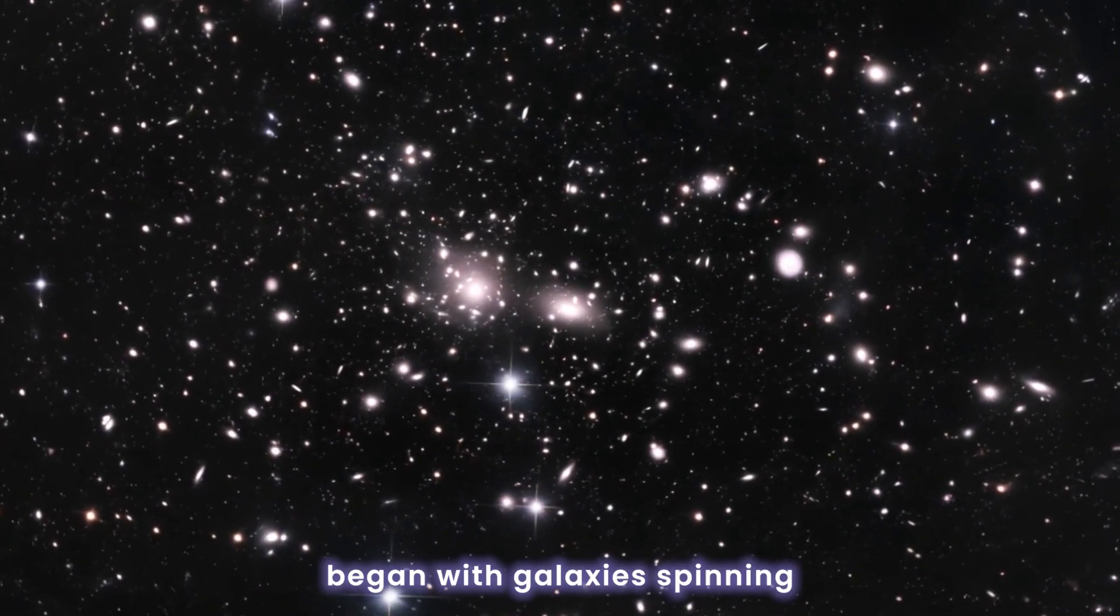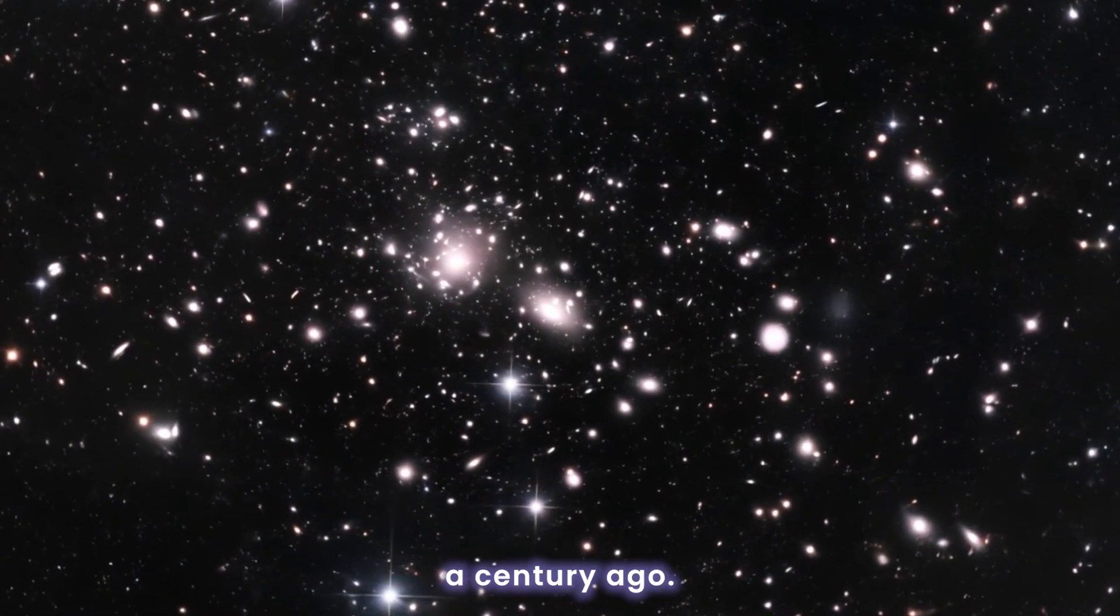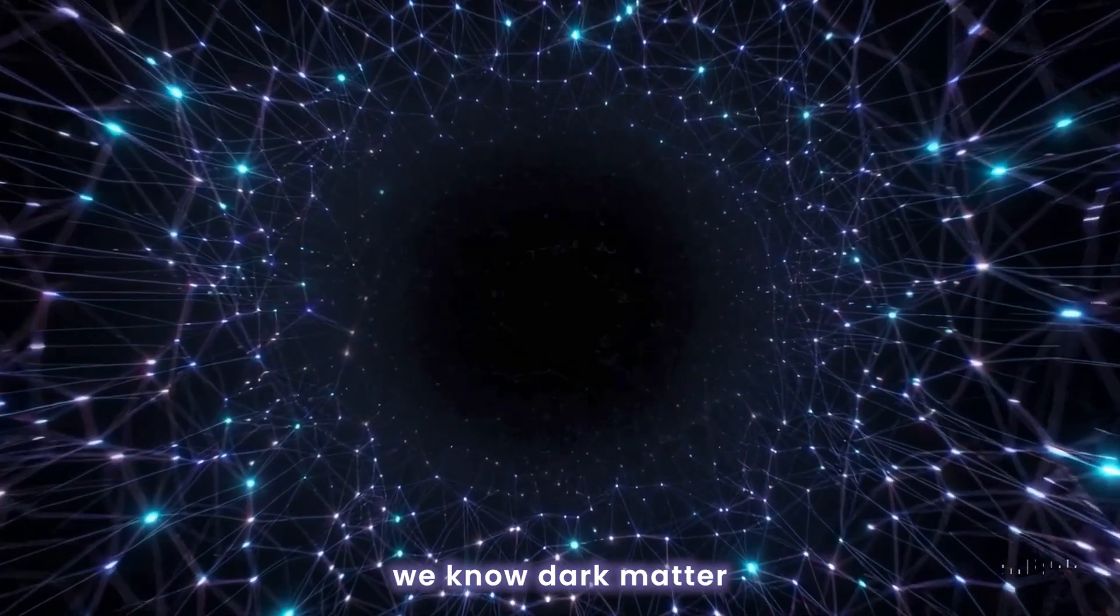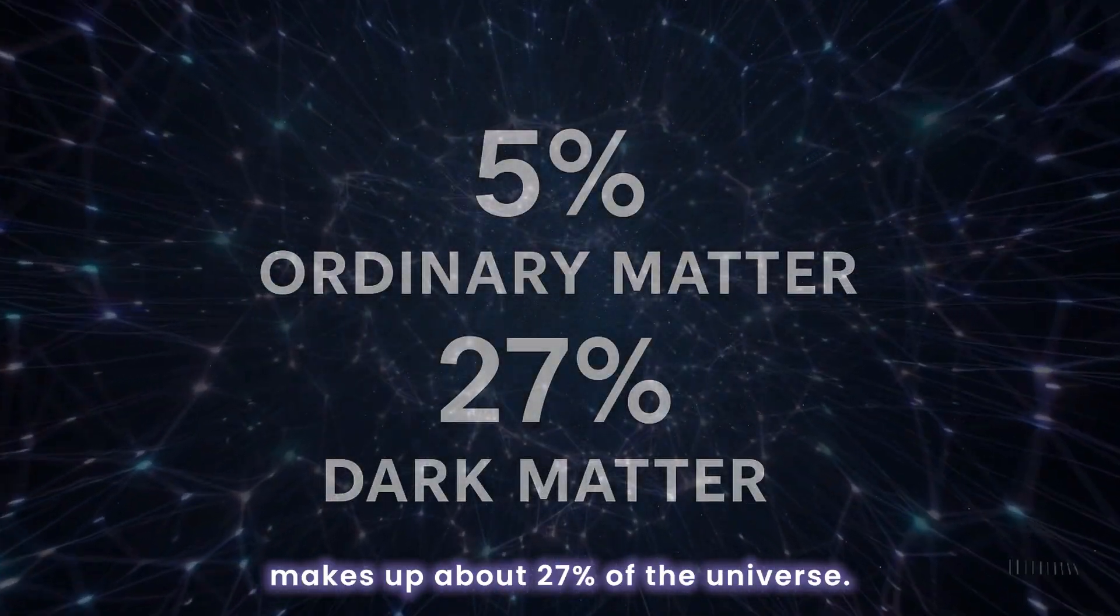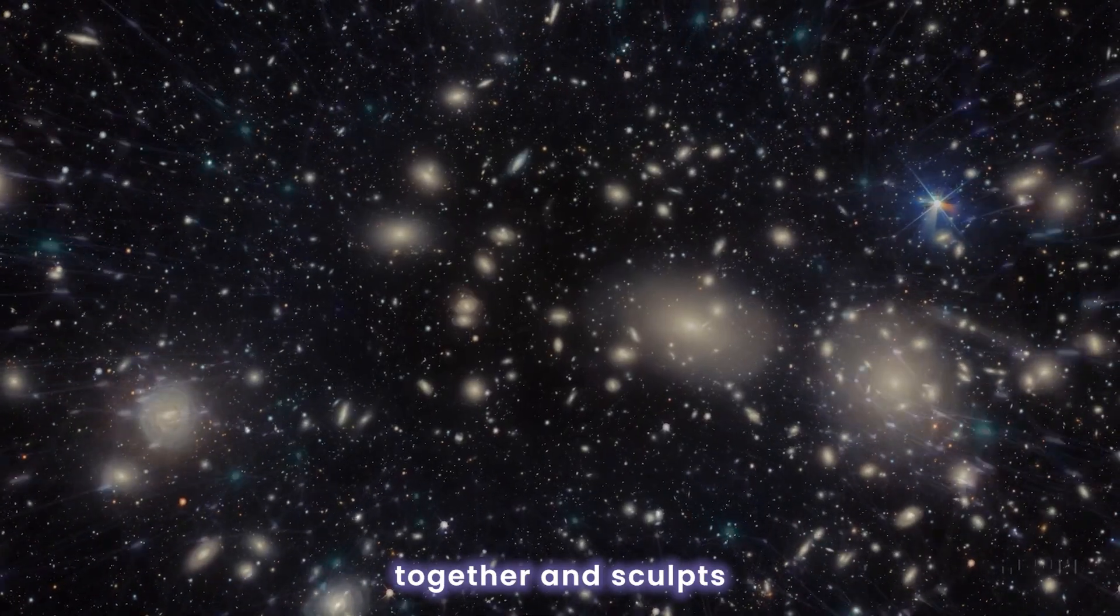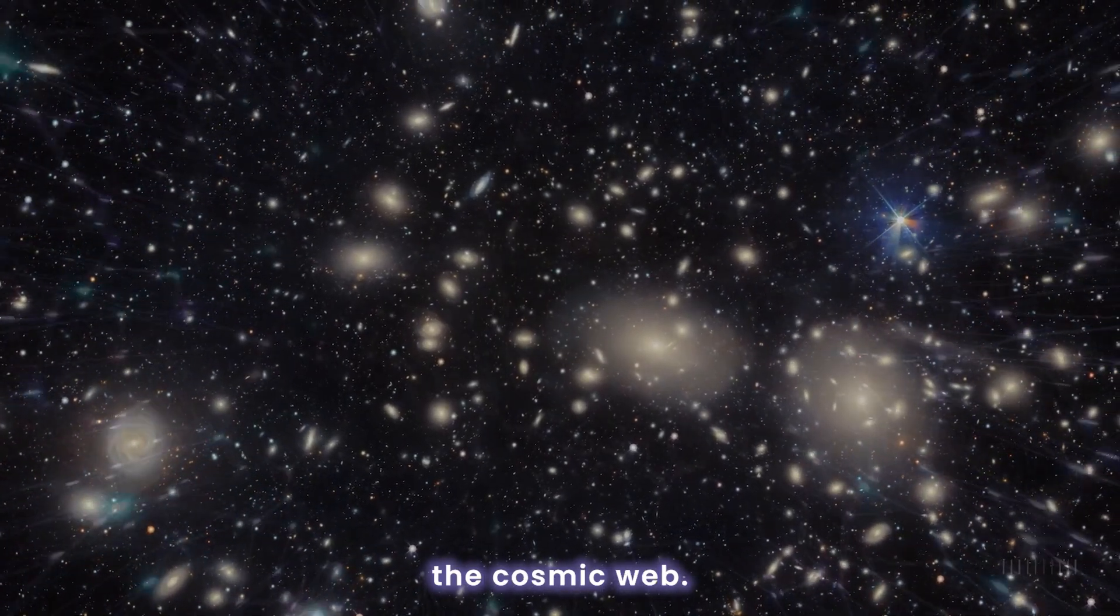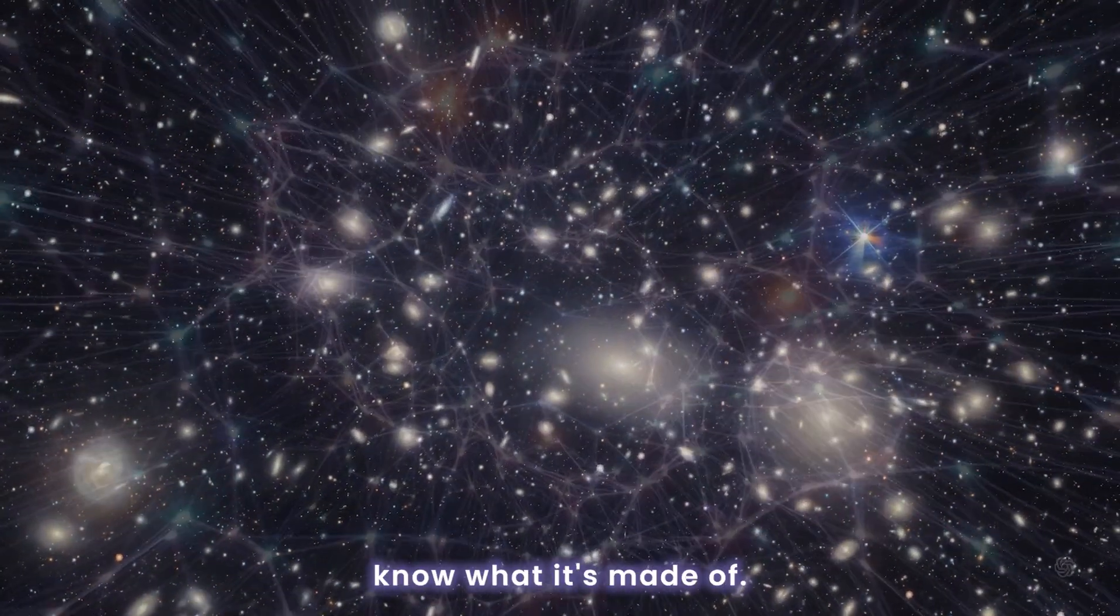It all began with galaxies spinning too fast nearly a century ago. Today, we know dark matter makes up about 27% of the universe. It holds galaxies together and sculpts the cosmic web. Yet we still don't know what it's made of.